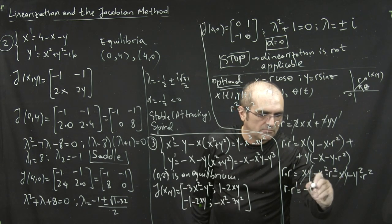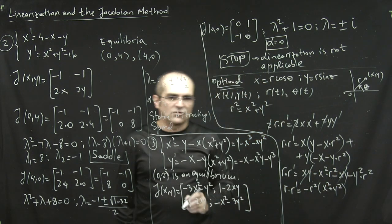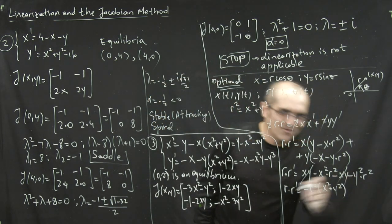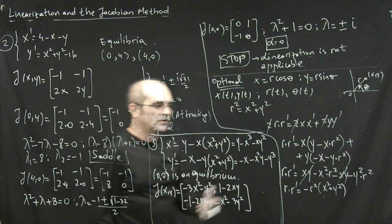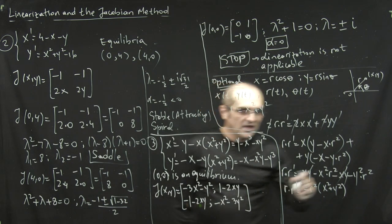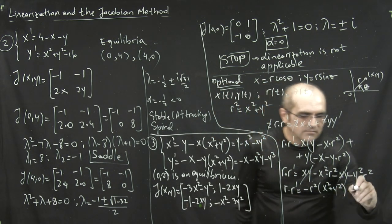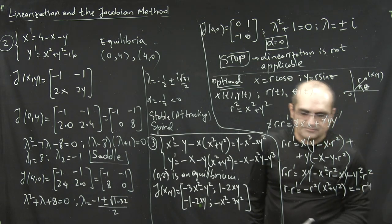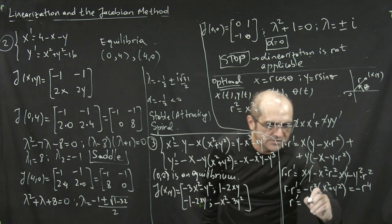xy cancels. Then you can pull out minus r squared. Again, you may wonder how come it works so nicely. Again, because it's worked out backwards actually. It's concocted from the polar coordinates and back to the Cartesian coordinates. So it's no magic here. And this is r squared and therefore this is minus r to the fourth. You can cancel r assuming it's not zero. So r prime is minus r cubed.